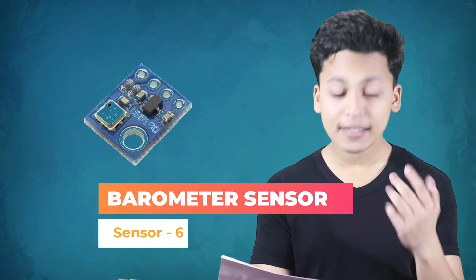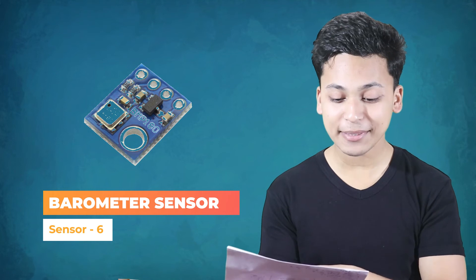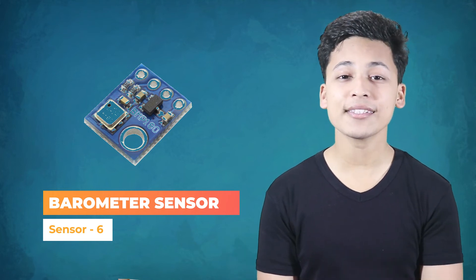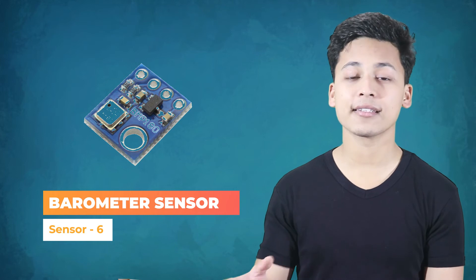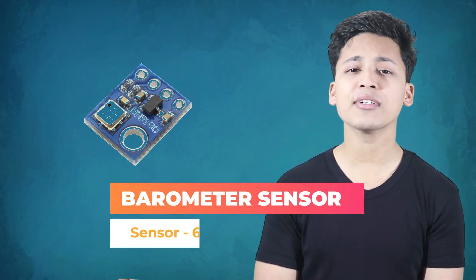The sixth sensor is the barometric pressure sensor. This is a very cool sensor — it tells you the external pressure of the environment and can also detect temperature and humidity. You can use it in robotics to find the actual height from the ground, making some cool robotic projects possible.